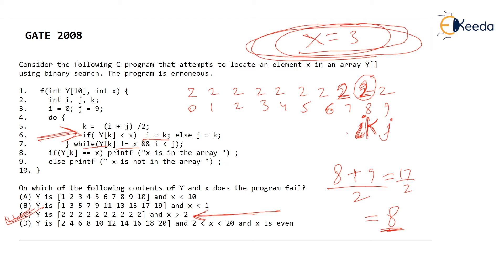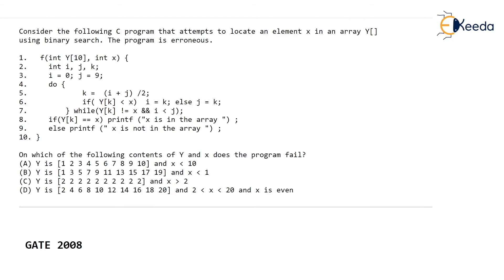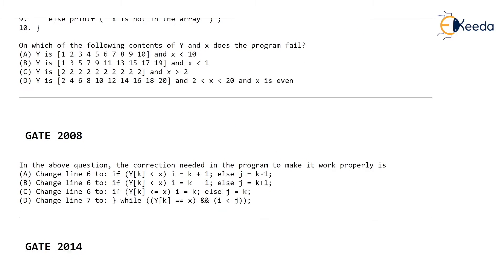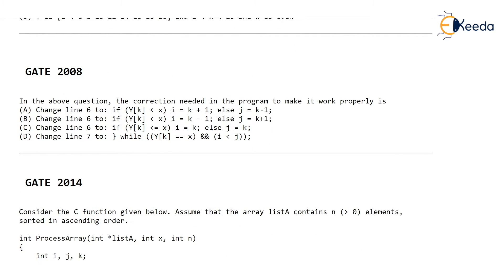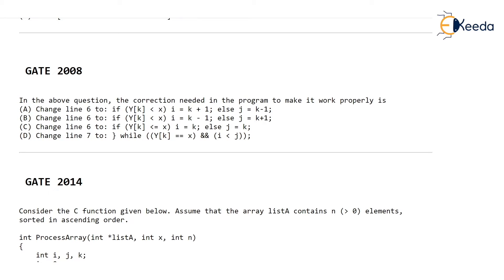This was actually a linked question. In continuation with that question, they are saying the correction needed in the program to make it work properly: change line 6 to — if y[k] is less than x, then i should be equal to k plus 1; else j should be equal to k minus 1.